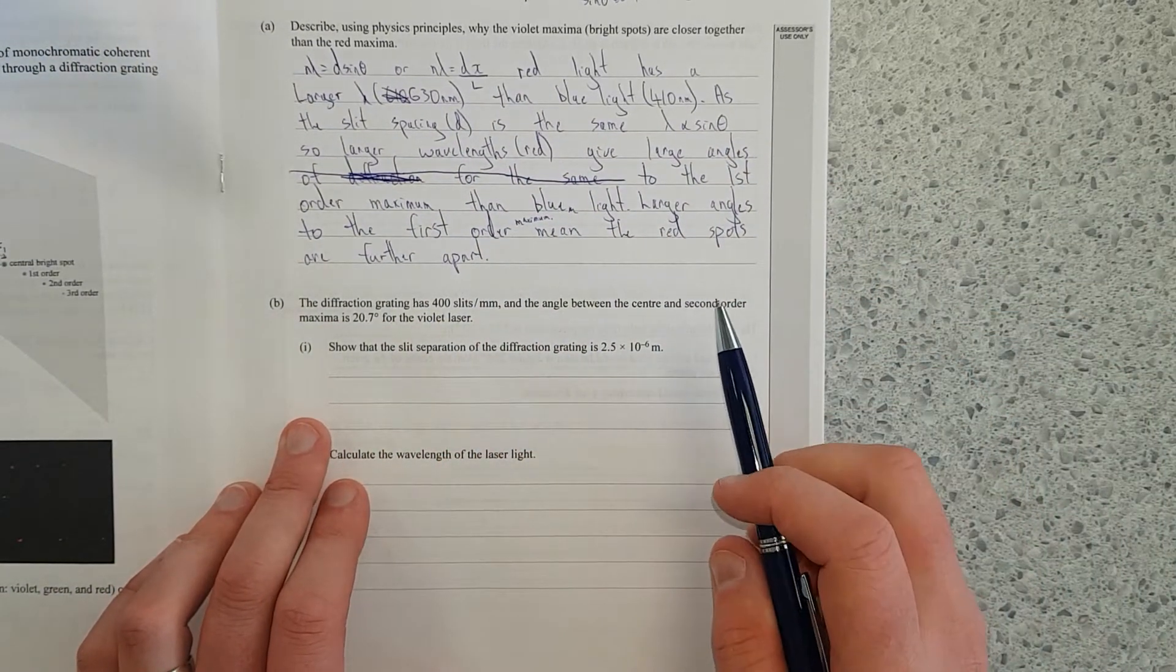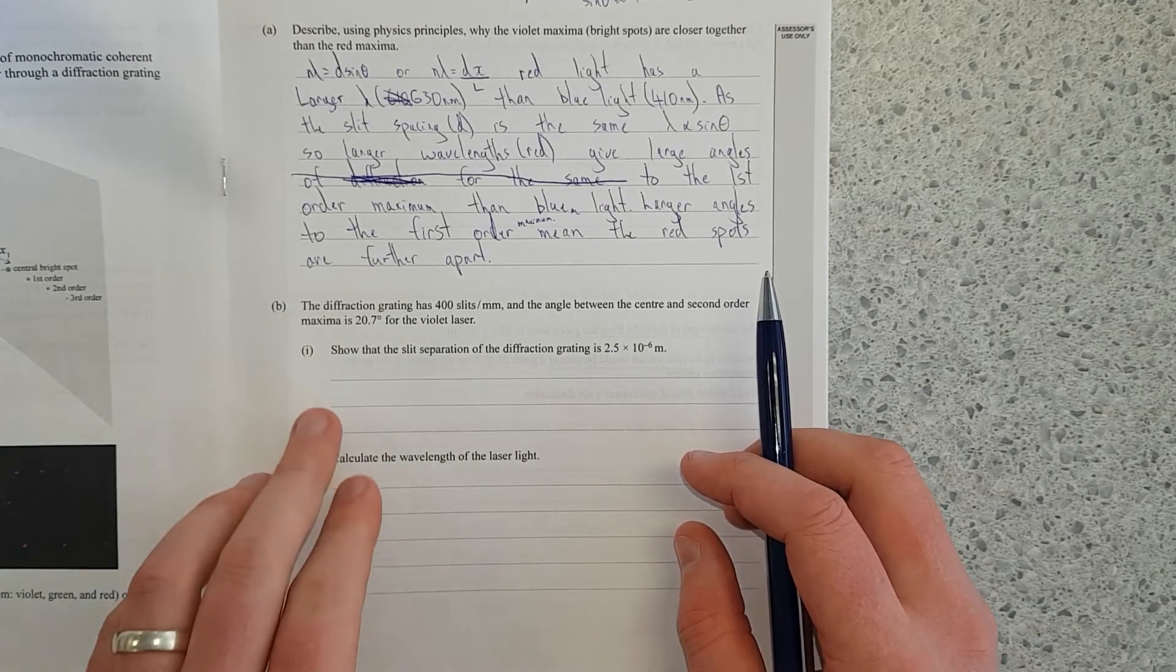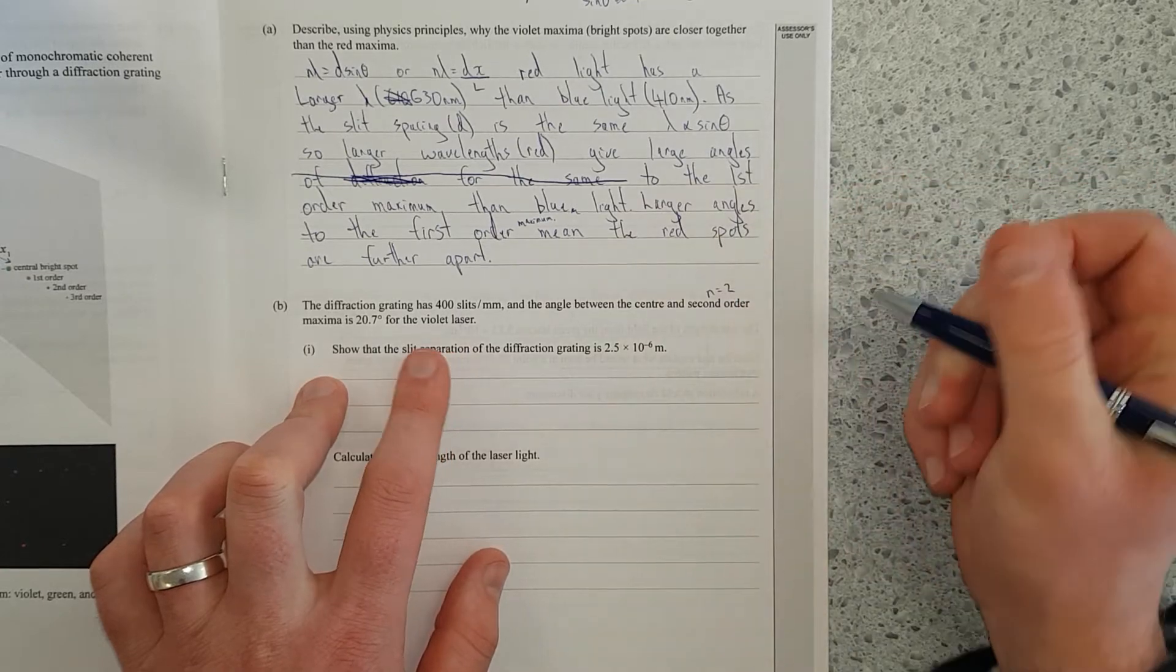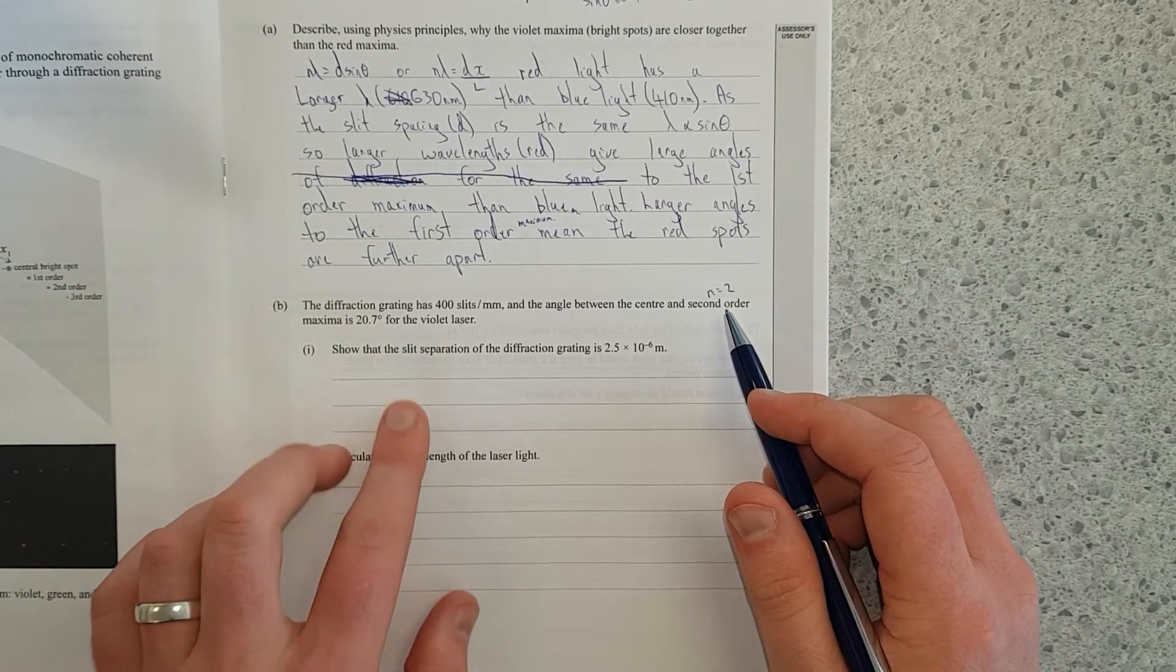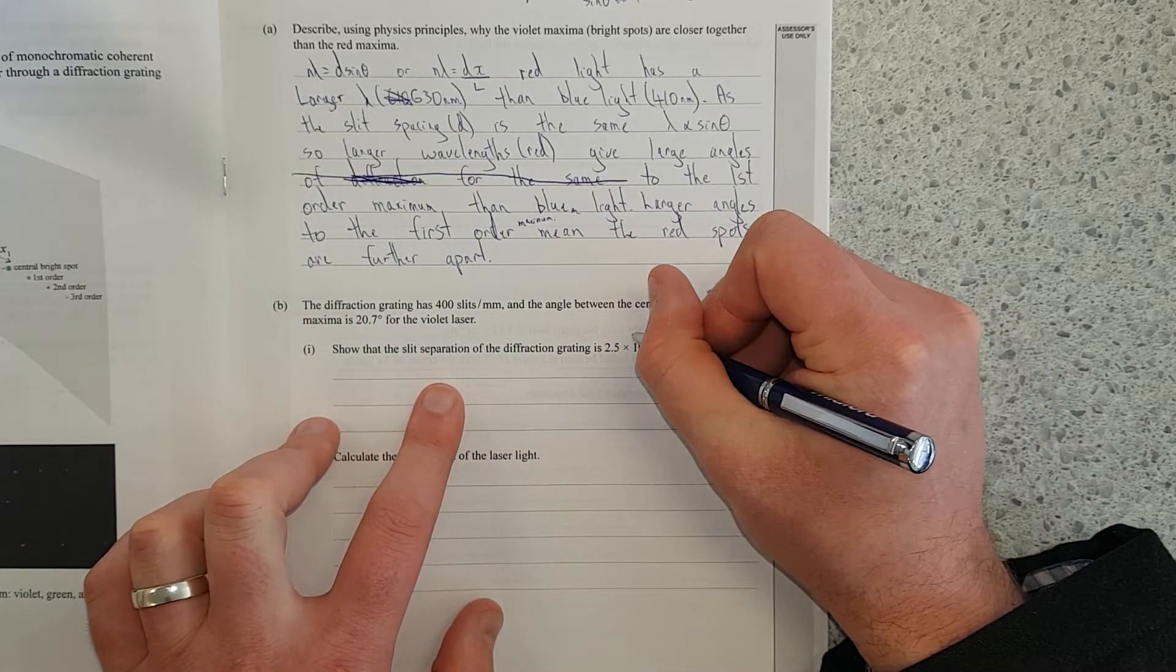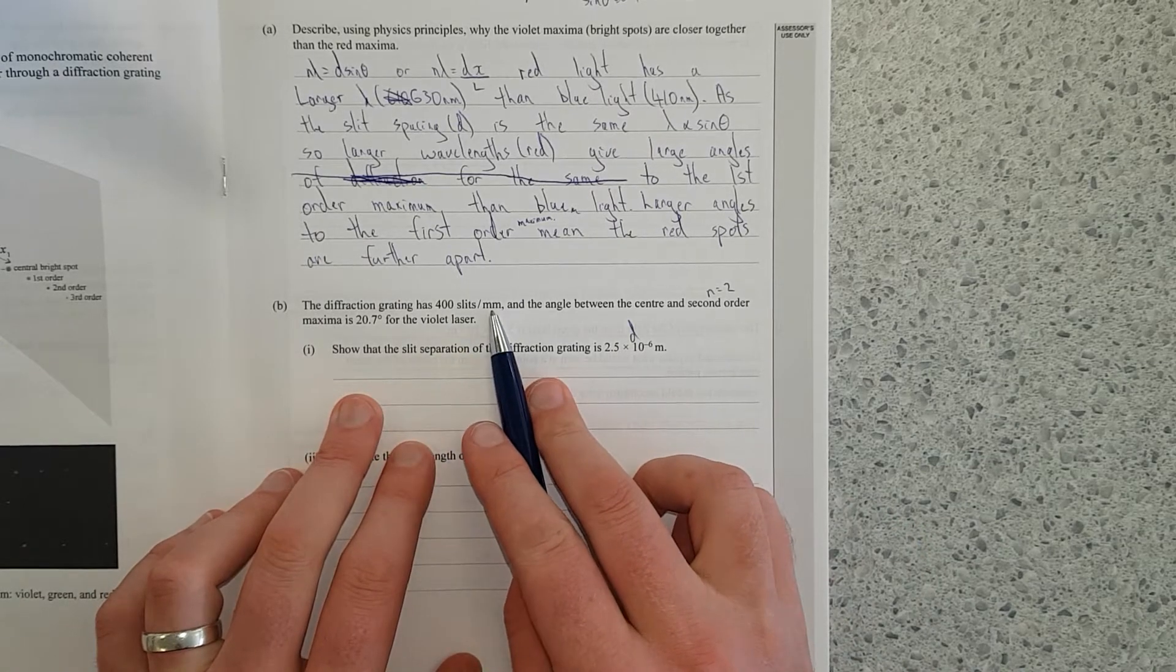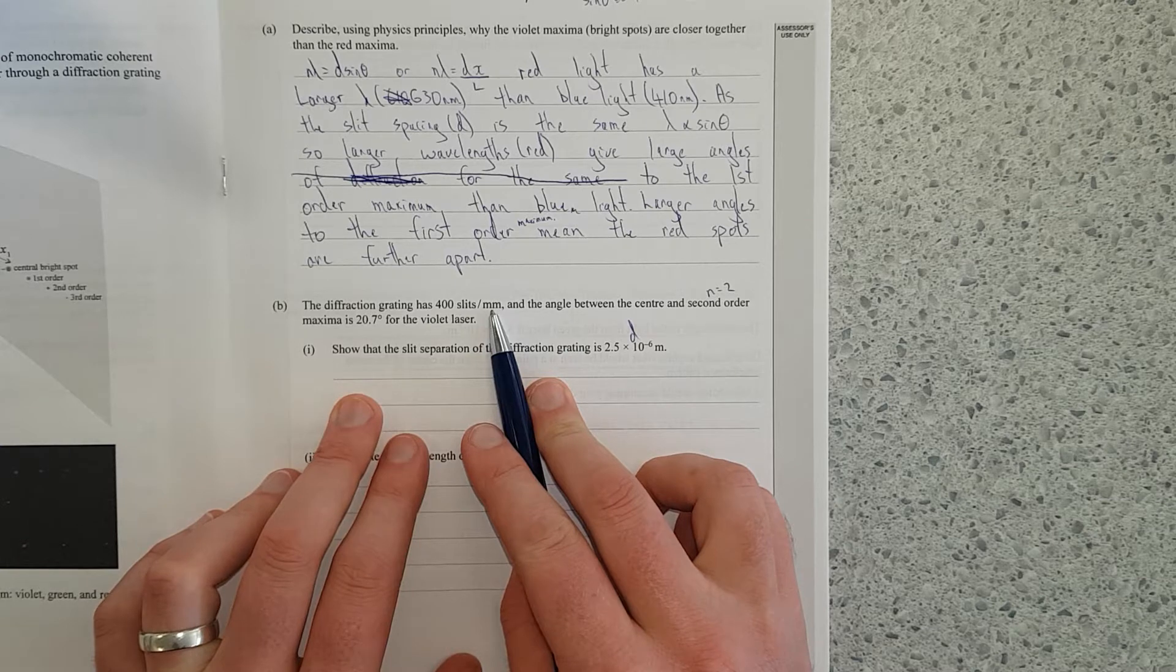Right. The diffraction grating has 400 slits per millimeter. The angle between the center and the second order maxima is 20.7 for the violet laser. So this is n equals 2. Oh, we're going to find out the wavelength. The slit separation is this. This is d. Oh, show that the slit separation is this. So this is slits per millimeter.